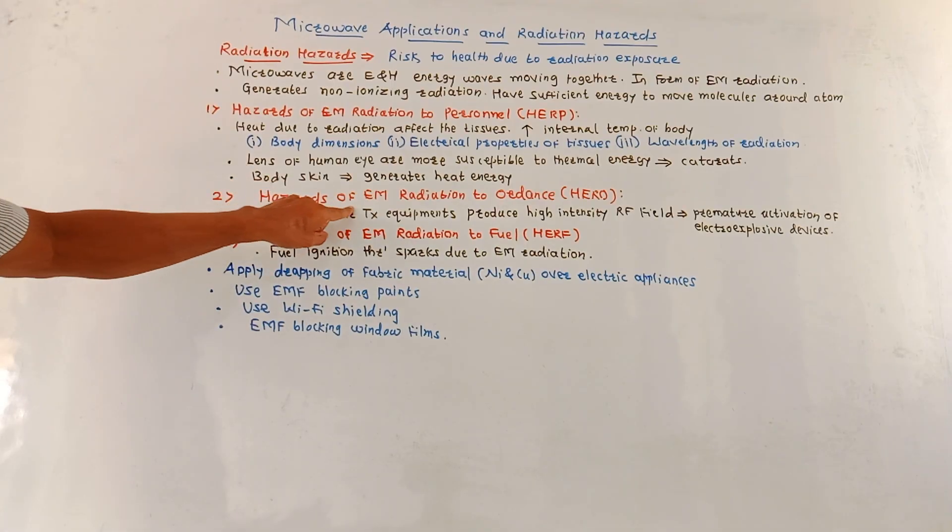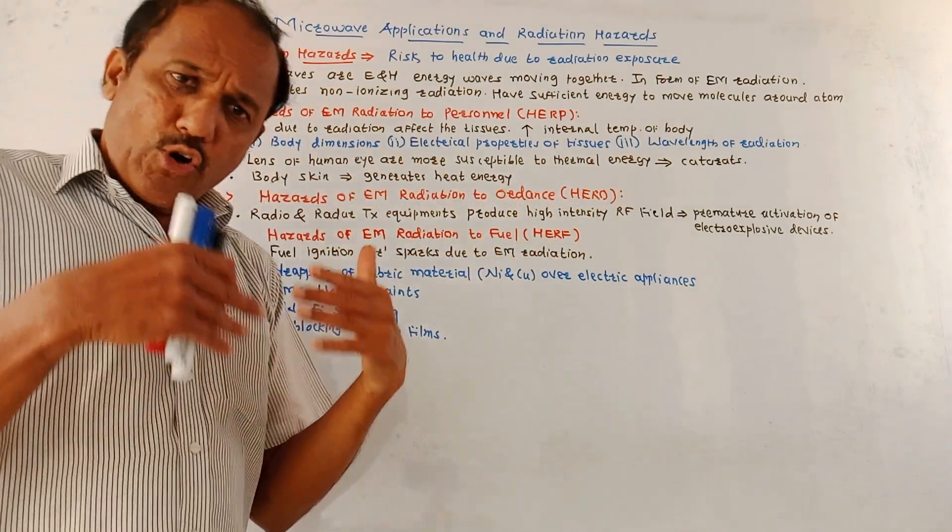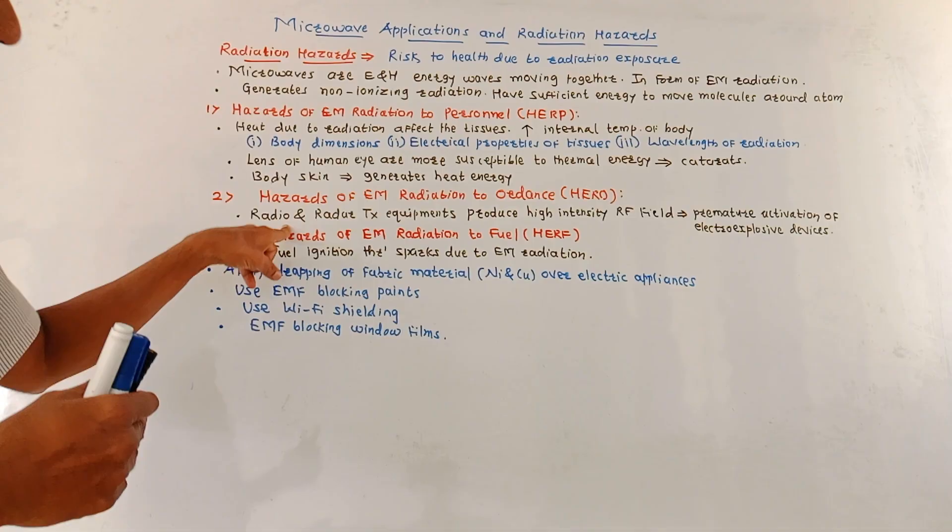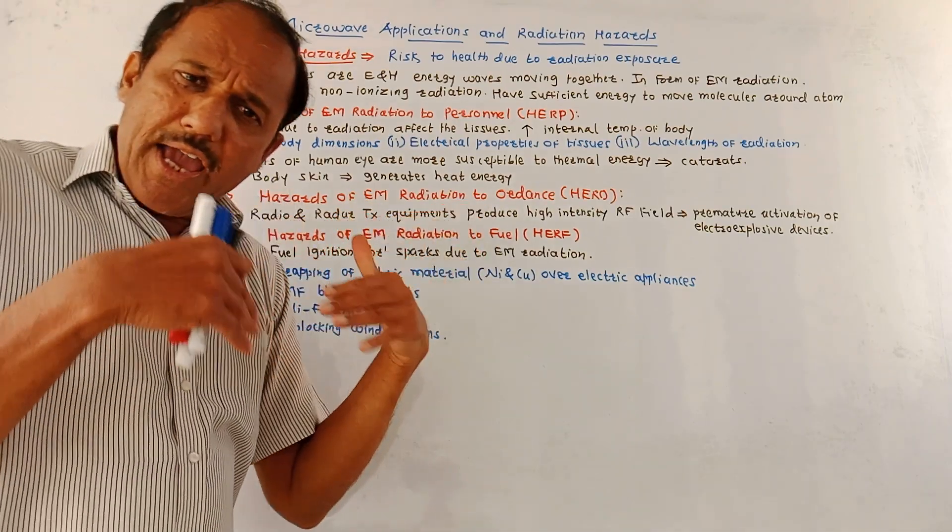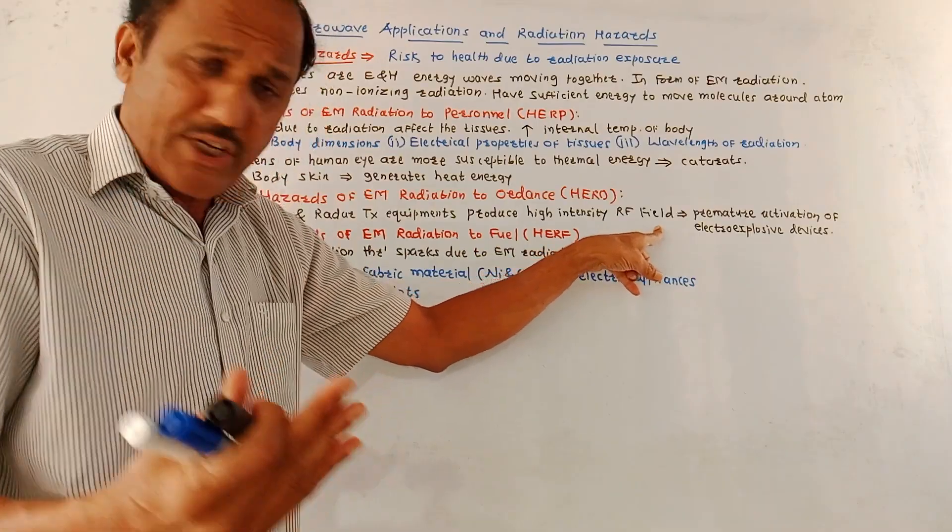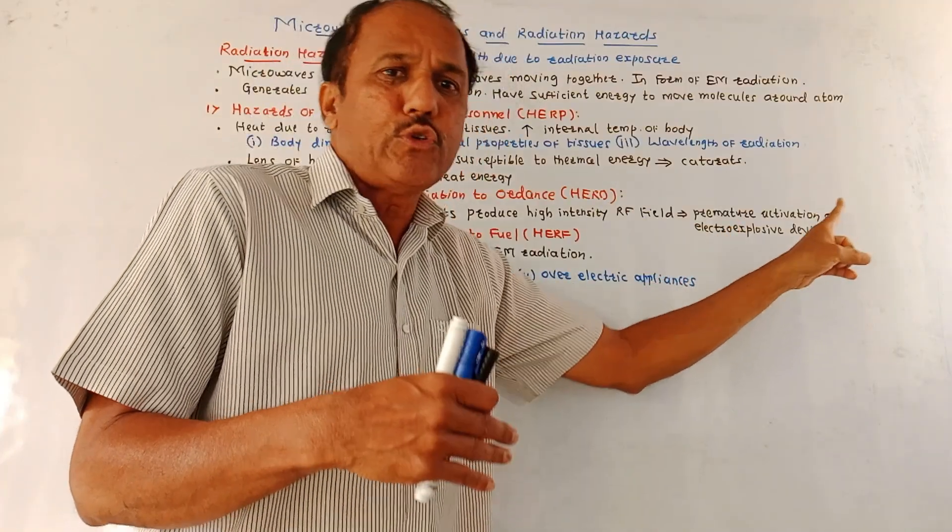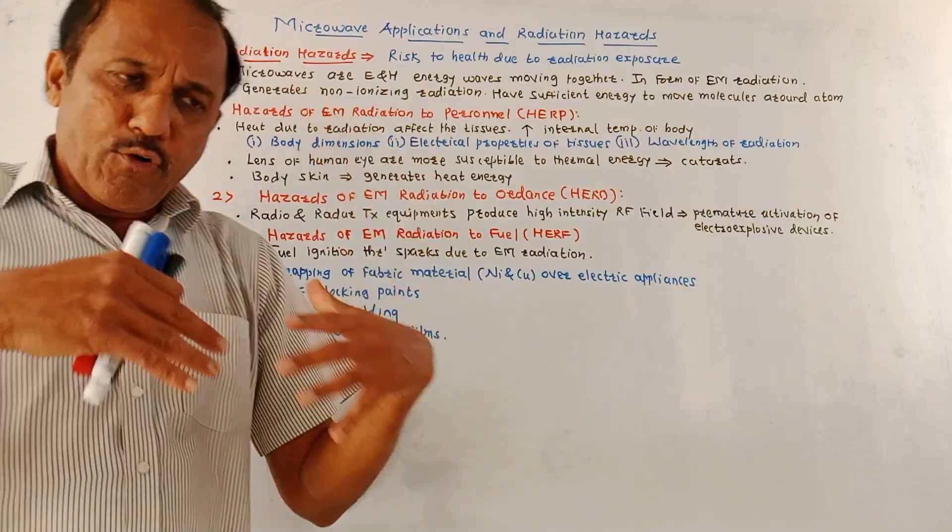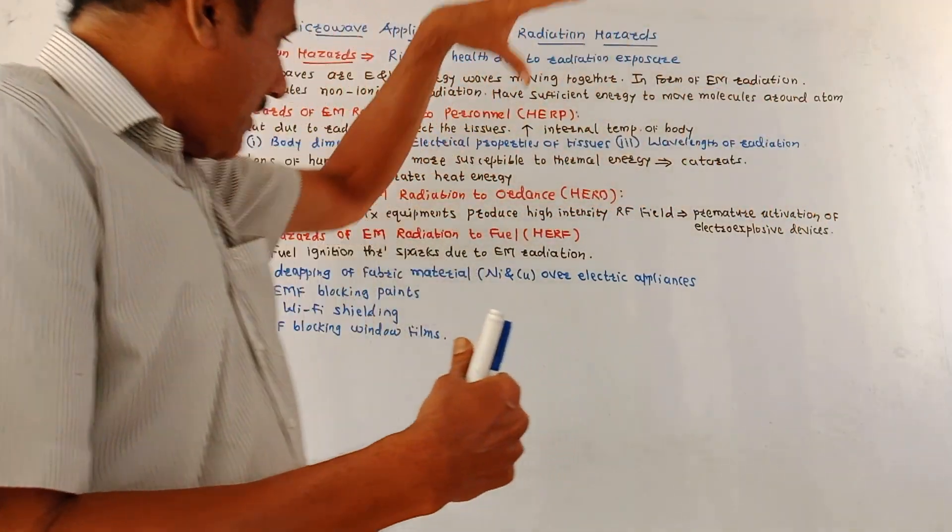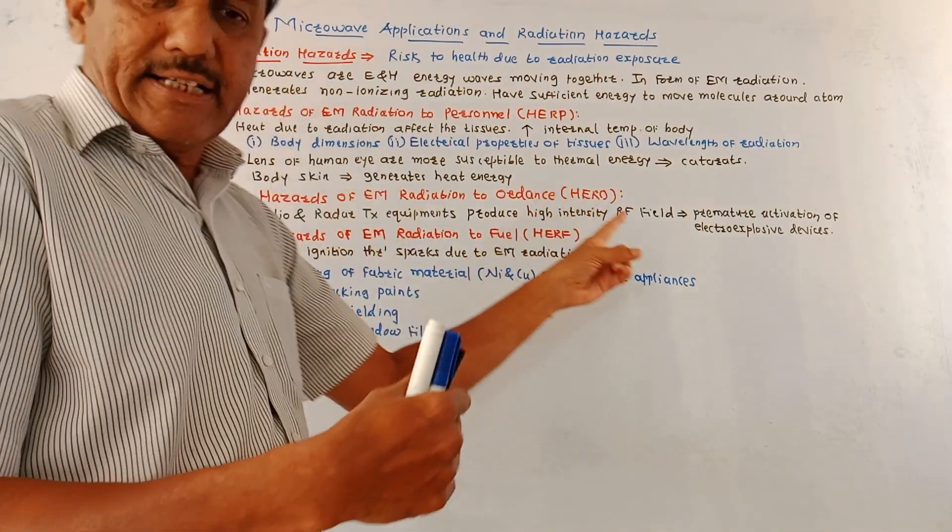Second type of radiation hazards is hazards of electromagnetic radiation to ordnance, that is HERO. In case of modern radios or radar transmitting equipment, high RF field, that is high intensity radio frequency field, is generated because of which it may happen that it will cause premature activation of some electro-explosive devices. That means before the decided time period, the activation of electro-explosive devices takes place due to radar transmitting equipments which are producing high intensity RF field.